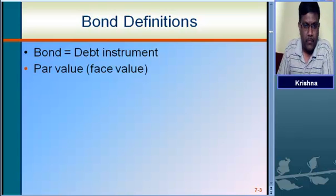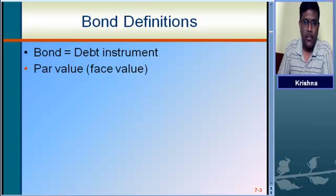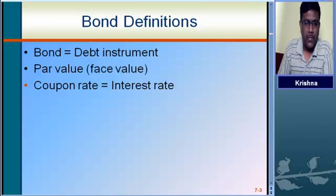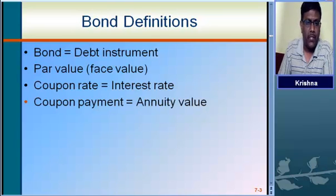Par value or face value is the value stated on the face of the bond. The face value is the amount which the issuing company is going to borrow from the investor, and they are going to repay it at the time of redemption. Coupon rate is nothing but the interest rate. At periodical intervals, the coupon payment will be paid to the investor. The coupon payment will be calculated on the par value. The formula is par value multiplied by coupon rate — that will be the coupon payment, otherwise called annuity value.